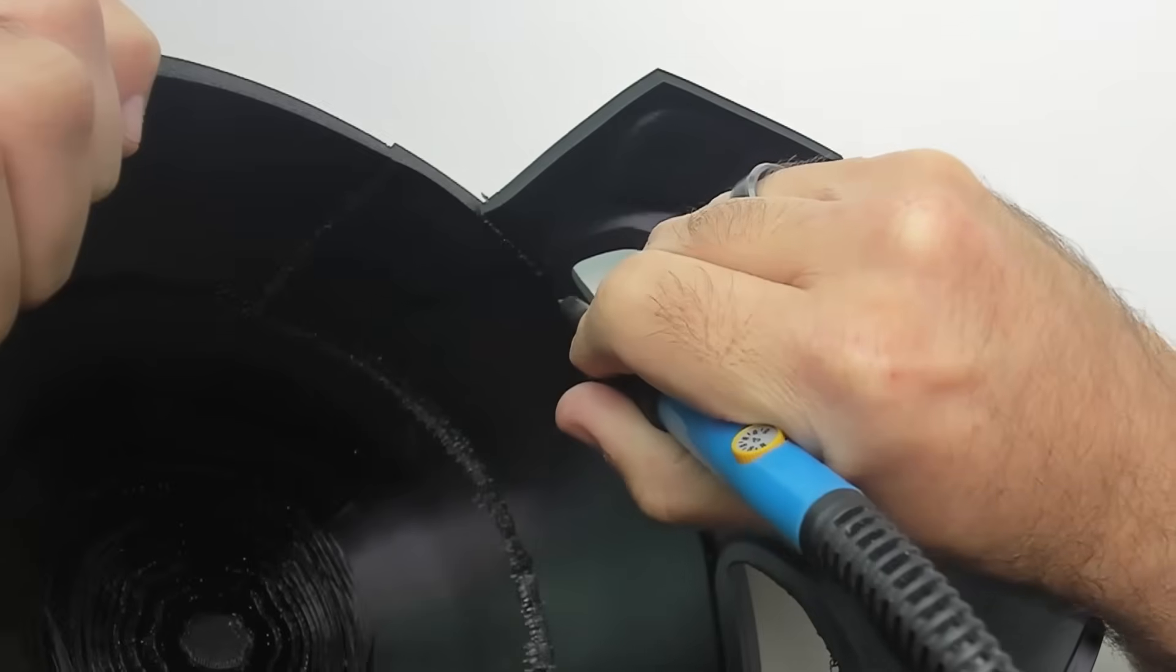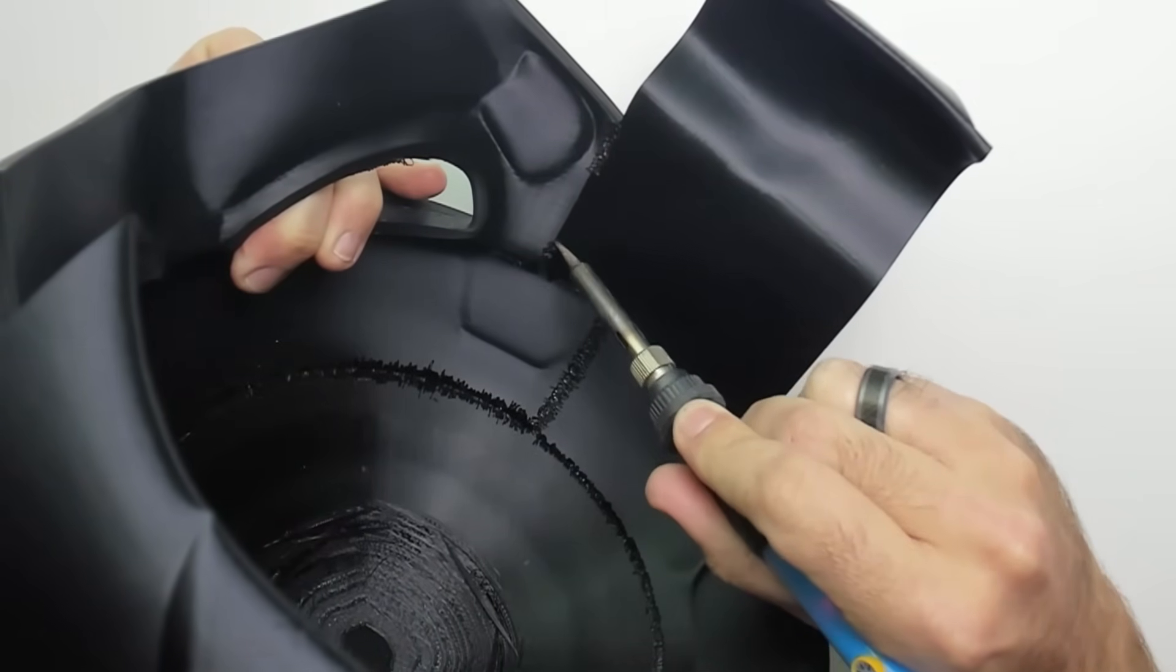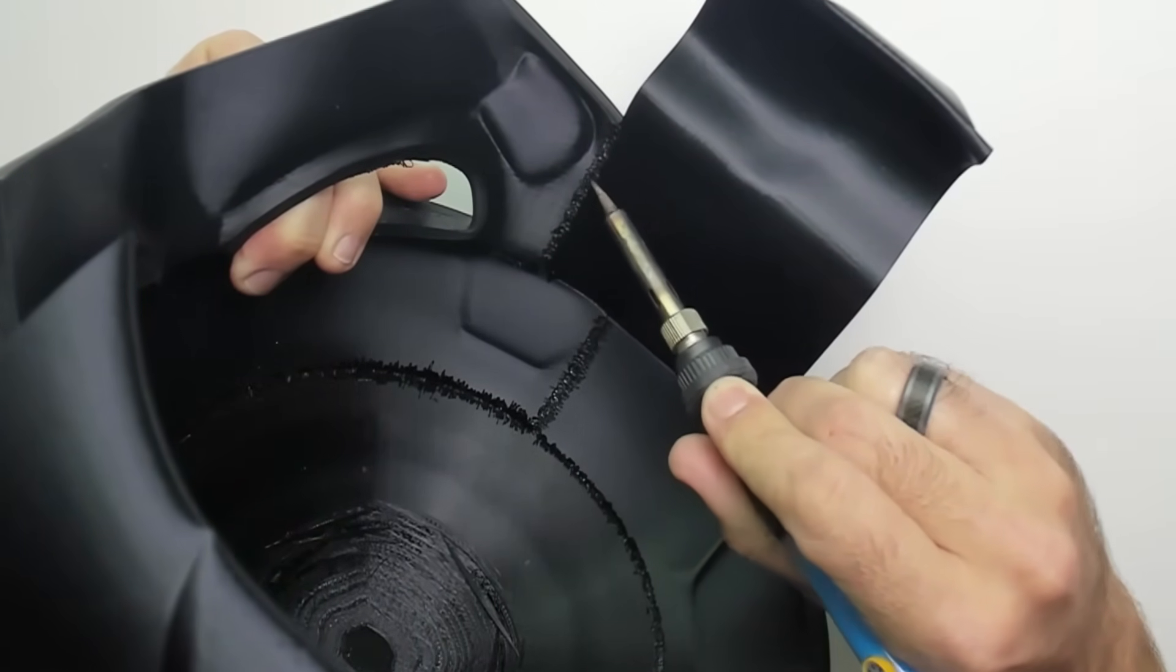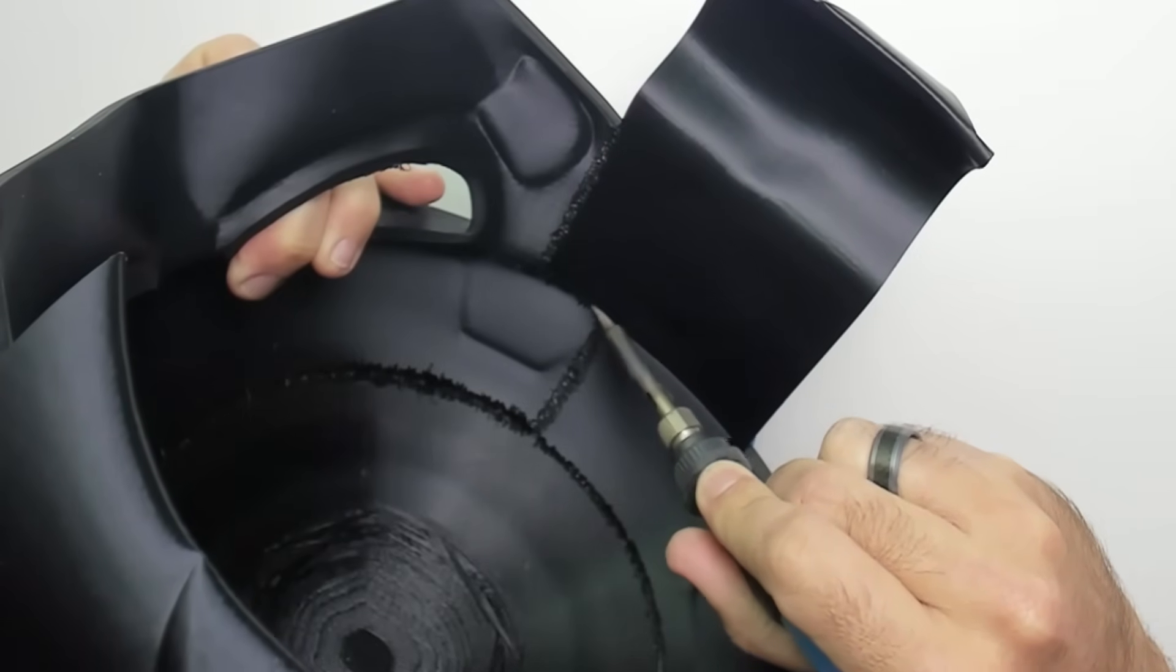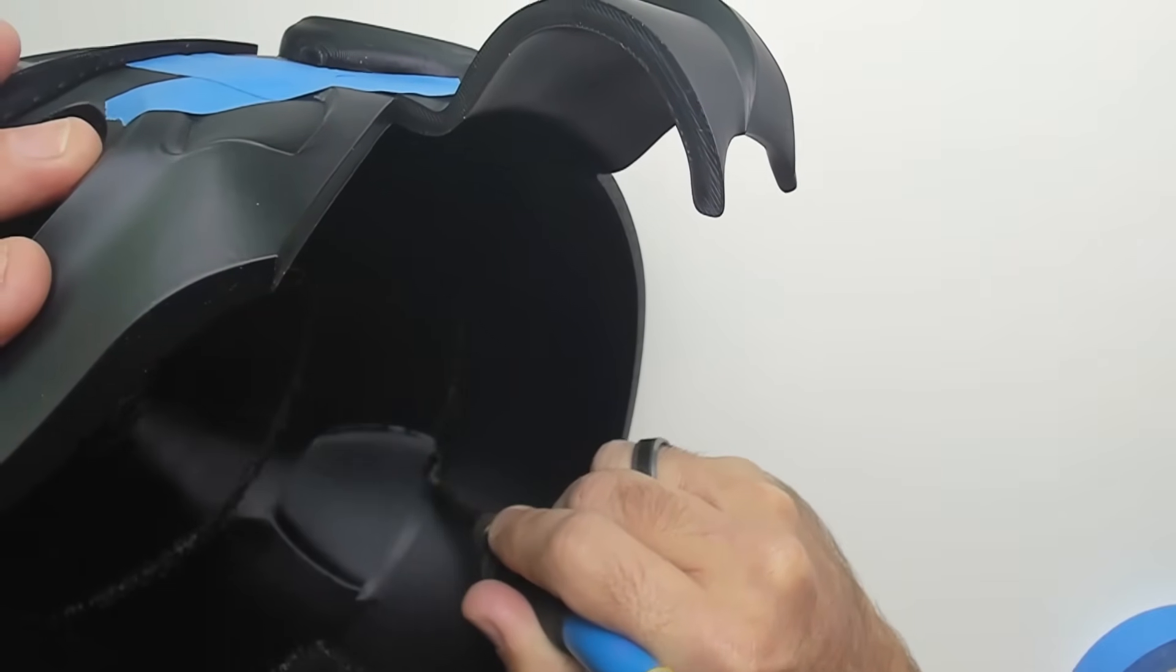For the outside of the seams you can fill them in using Bondo Spot Putty. I put an affiliate link in the description for that as well as other tools or materials mentioned in this video. And that's all there is to it. As long as you make sure the parts are positioned correctly and taped together this is a very easy process.